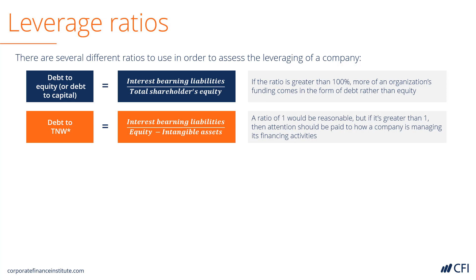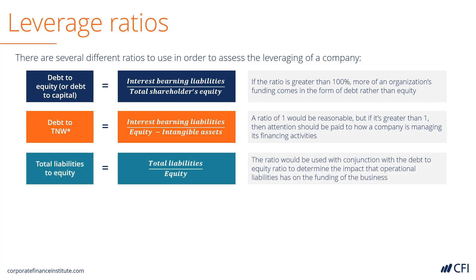Next we have the total liabilities to equity ratio. In this case, we take all liabilities, including non-interest-bearing debts — for example, accounts payable would be included in total liabilities. This way we can assess the company's obligations including its short-term working capital requirements and compare that to the total amount of equity in the business. By using this ratio in conjunction with the debt-to-equity ratio, it is then possible to see the impact of operational activities on the business — meaning, is working capital tying up a lot of money on the balance sheet?